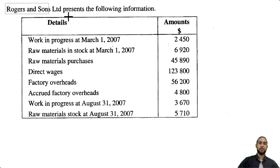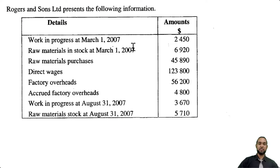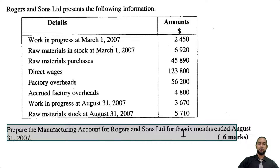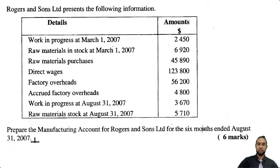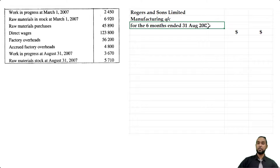Let's take a look at part C. Rogers and Sons presents the following information: work in progress at start, raw materials at start, raw material purchases, direct wages, factory overheads, accrued factory overheads, work in progress at end, and raw materials at end. They want us to prepare a manufacturing account for the six months ended August 31st, 2007. Head up the statement: Rogers and Sons Limited, manufacturing account for the six months ended 31st August 2007.